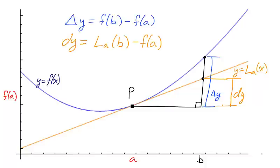Delta y is the actual change, f(b) minus f(a), while dy is the estimated change, the differential, which makes use of the tangent line.